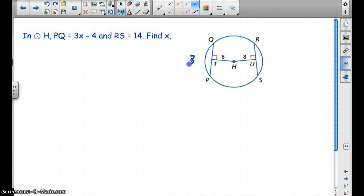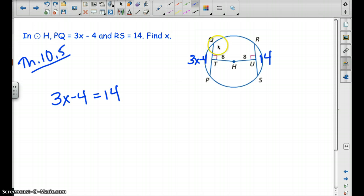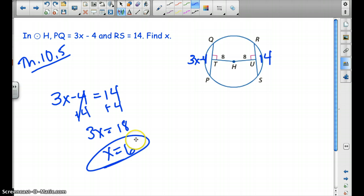Let's try another one. PQ is 3X minus 4. And RS is 14. So see if you can pause the video and try this one on your own. So we know the chords are equidistant from each other. So we can go ahead and set these two chords equal to each other because they are congruent. So we're going to add the 4 over and we get 3X equals 18. So X equals 6. And that is what we wanted.